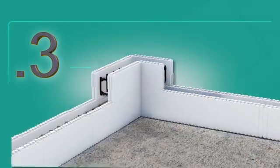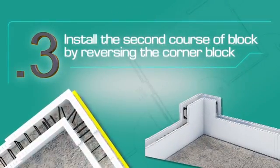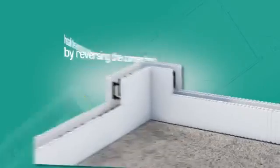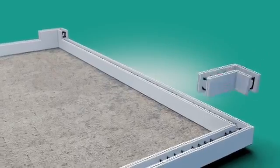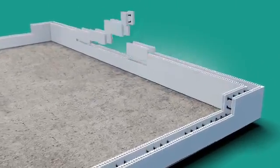Install the second course of block by reversing the corner blocks so that the second course is offset from the first in a running bond pattern. At this point, check for level across all of the blocks.